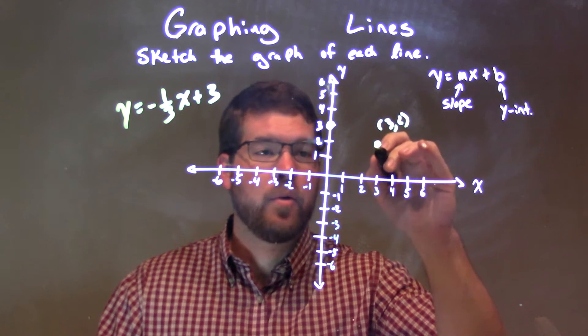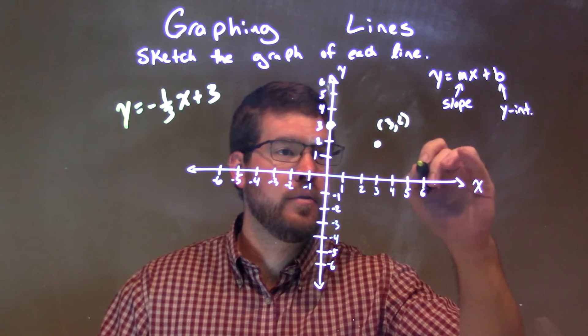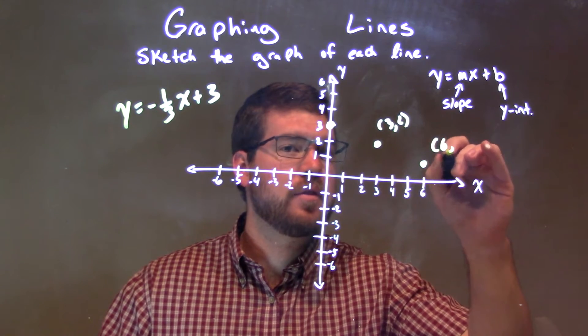And we can even do it again. From that point, down one unit over one, two, three. And that point would be six, one.